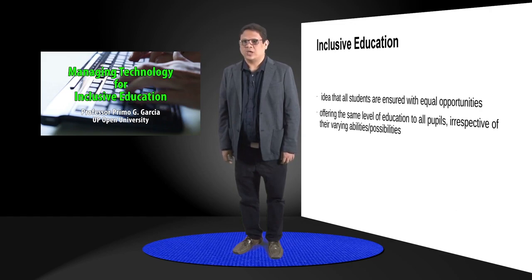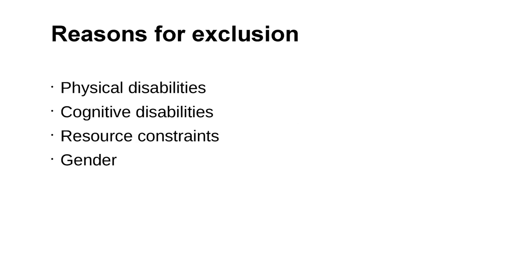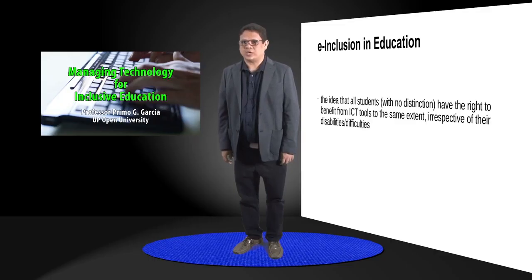The concept of e-inclusion has also been applied in education. Inclusive education is the idea that all students are ensured with equal opportunities. It means offering the same level of education to all pupils and individuals, irrespective of their varying abilities and possibilities. There are several reasons for exclusion: first, physical disabilities; second, cognitive disabilities; third, resource constraints; and last, gender.